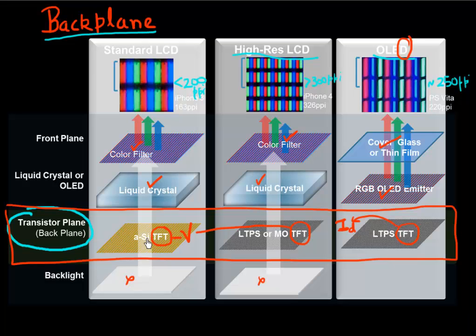So far the workhorse of the industry has been amorphous silicon. Most of these displays have used amorphous silicon as the thin film transistor material. That carried the industry for a long time, all the way from the 1980s till the later part of 2000.